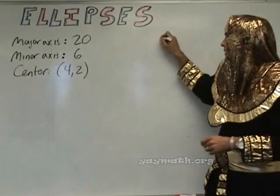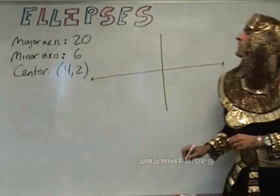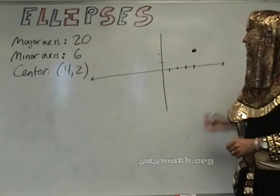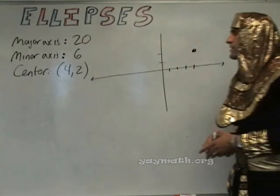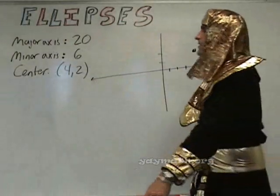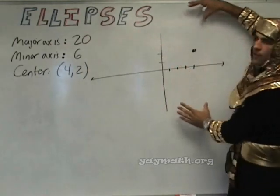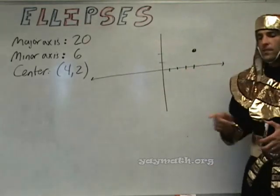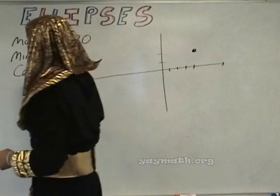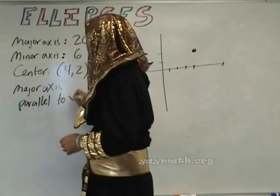So we can actually start this graph very easily. So if this is center (4,2), 1, 2, 3, 4, 1, 2, here, and the major axis is 20, minor axis is 6. So right now, we don't necessarily know if this goes left or right yet, do we? We don't know if the ellipse is horizontal, or whether this ellipse is vertical, right? Okay, there's one piece of information that I left off. What piece of information on your paper is left off on the board? Parallel to the y-axis. What's parallel to the y-axis? Major axis. Major axis parallel to y-axis.